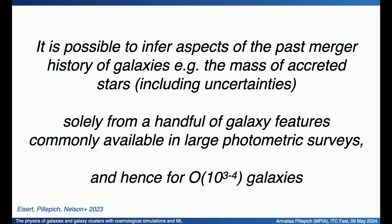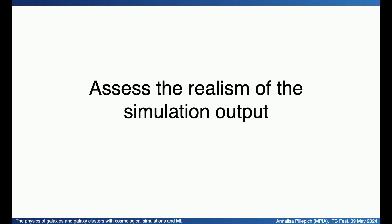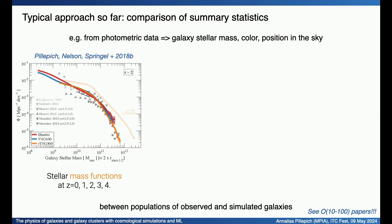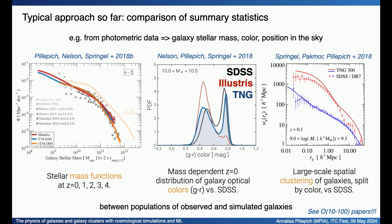The next step would be applying this to real survey data, but we didn't go there yet because in order to trust the simulation-based inference, we need to show that the simulation's results are realistic enough. And here I come to my next point: assessing the realism of the simulation output. For decades, we have assessed simulation outcomes with traditional methods — comparing summary statistics such as galaxy stellar mass functions, distribution of galaxy colors in a given bin of stellar mass, or angular clustering in the sky — from simulations versus observations.